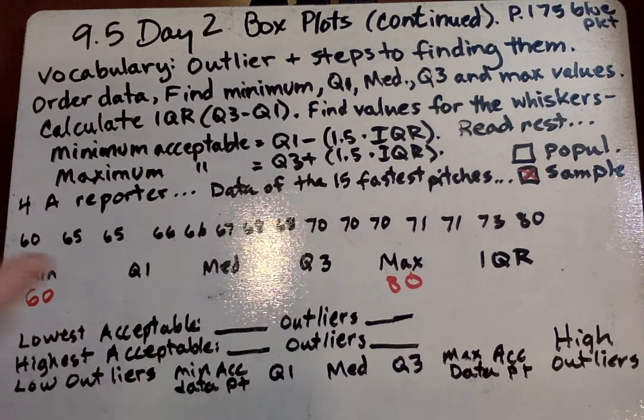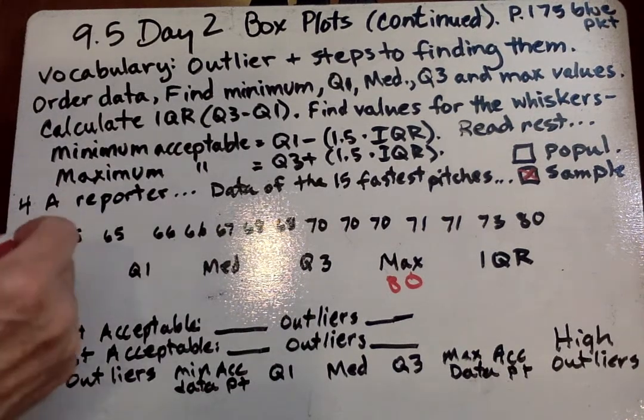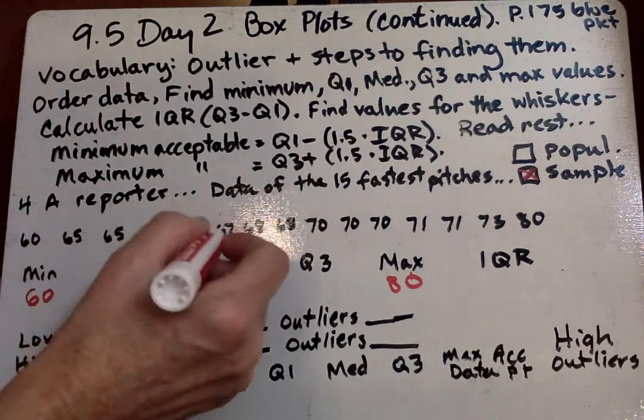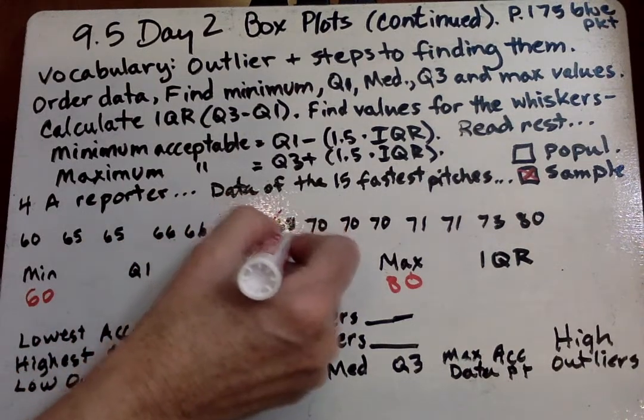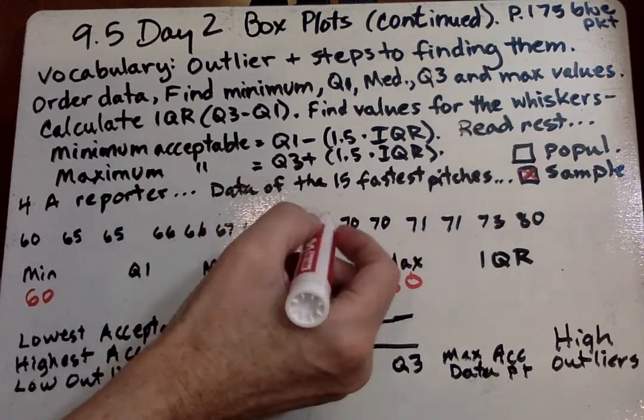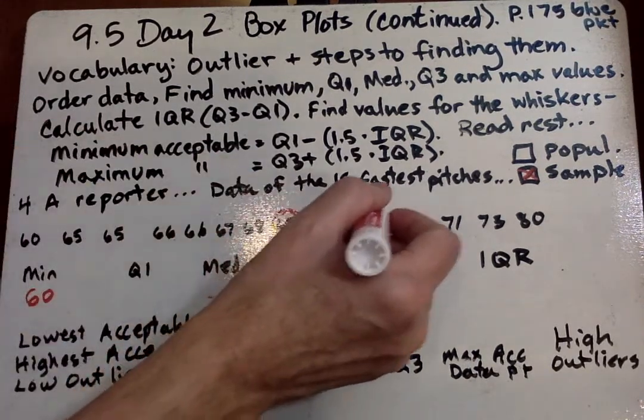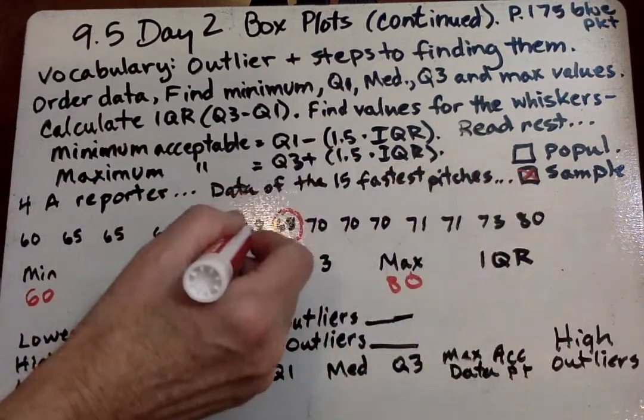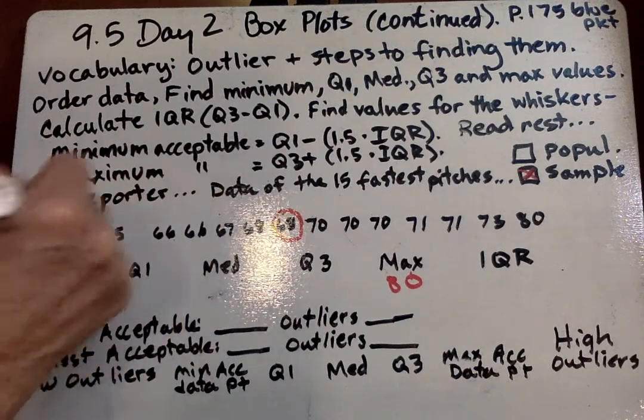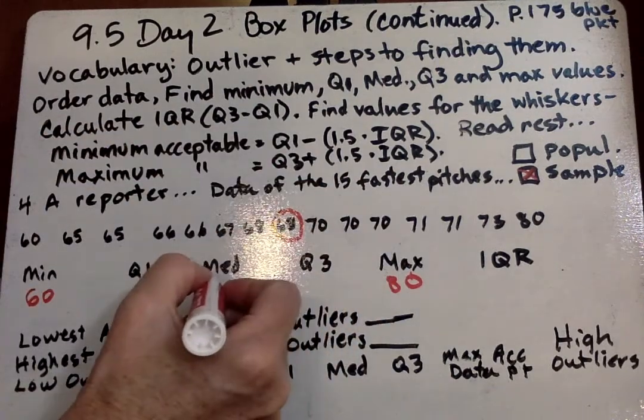Now we're going to split the data in half. If we know there's 15, 1, 2, 3, 4, 5, 6, 7. This is our 8th number, so there should be 7 on that side and 7 on this side. 1, 2, 3, 4, 5, 6, 7. 1, 2, 3, 4, 5, 6, 7. So 68 is our median.